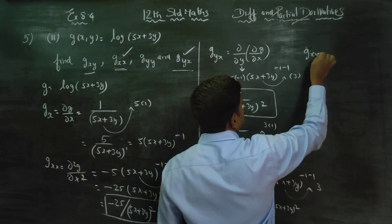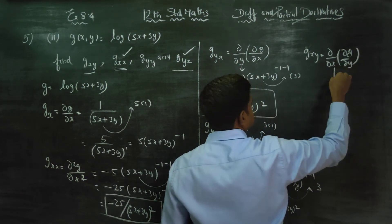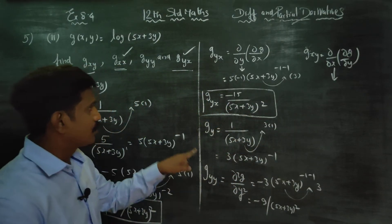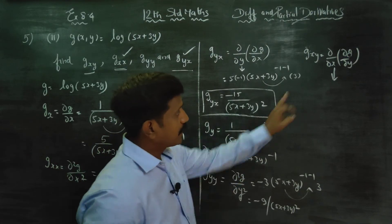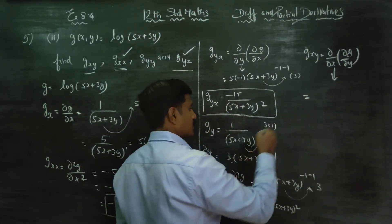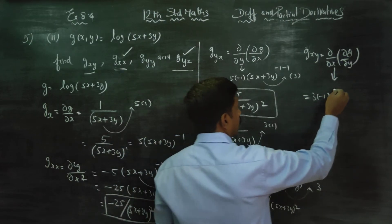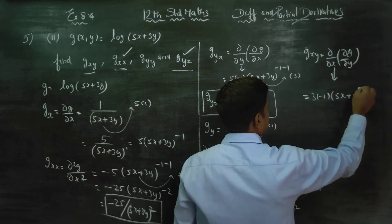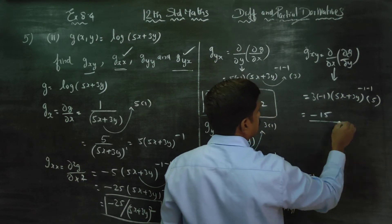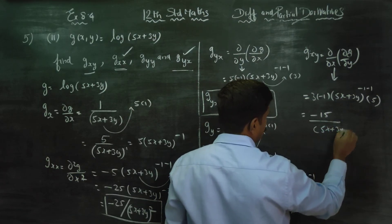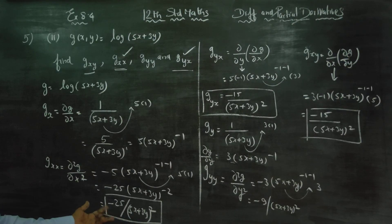Finally, finding gxy. What is the meaning of gxy? It means ∂/∂x of (∂g/∂y). Taking ∂g/∂y and differentiating with respect to x: applying power rule, 3 into minus 1, with (5x plus 3y) to the power minus 1 minus 1, and by chain rule the x part gives a further factor.